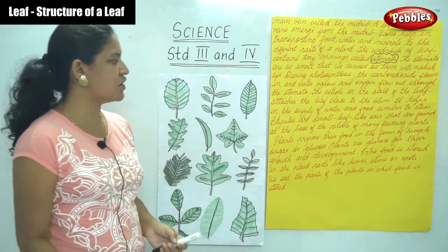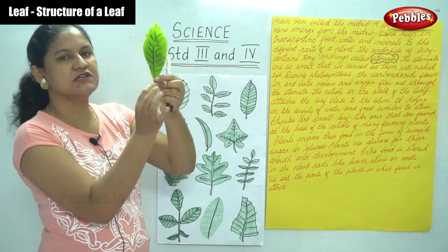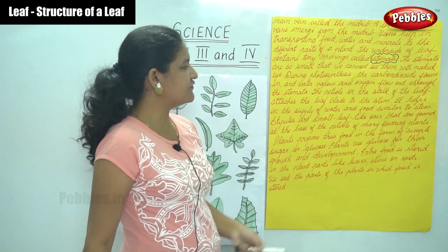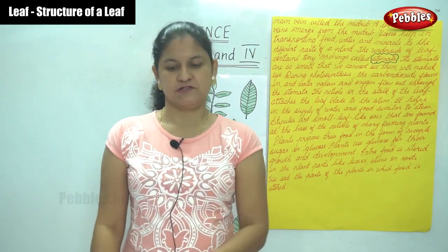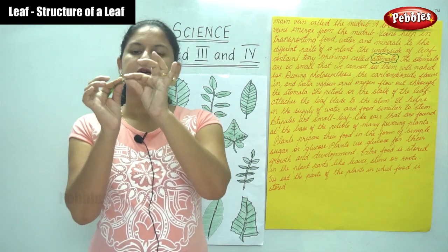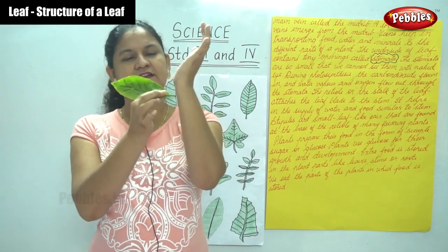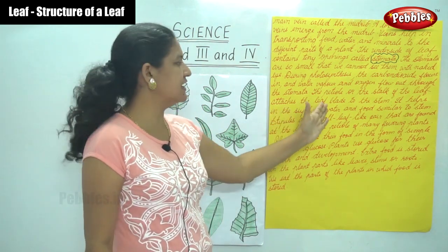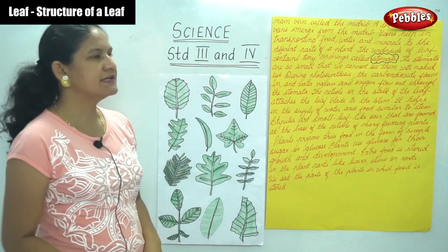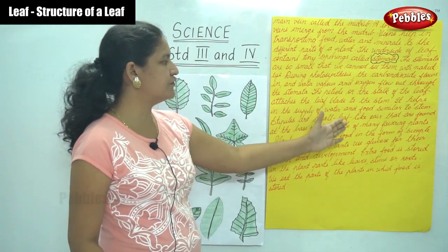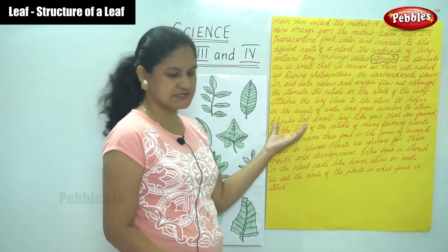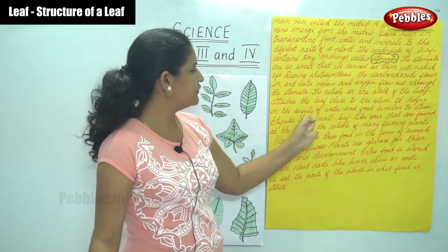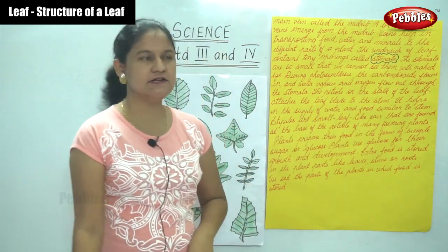The petiole, or stalk of the leaf, attaches the leaf blade to the stem. It helps in the supply of water and food, similar to the stem.